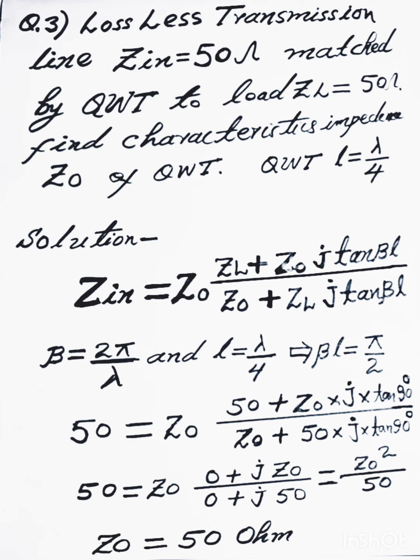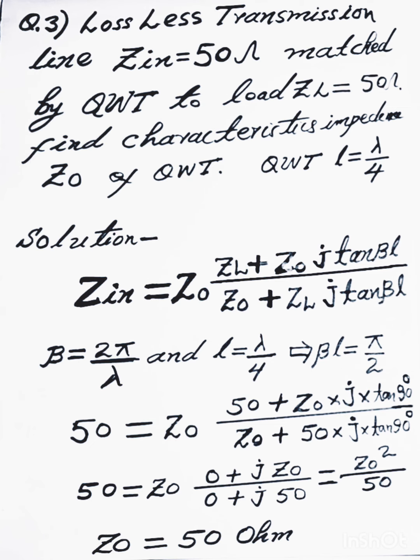j Z0 divided by j 50. So 50 equal to characteristics impedance Z0 square divided by 50. So characteristics impedance Z0 equal to 50 ohm.